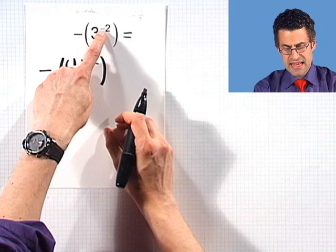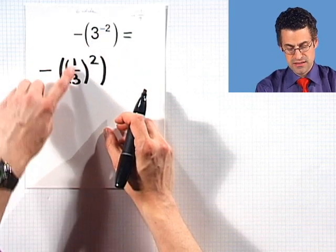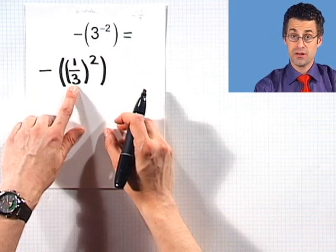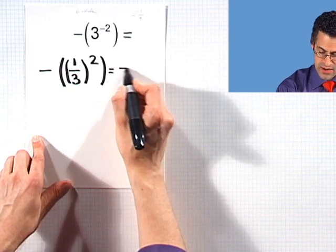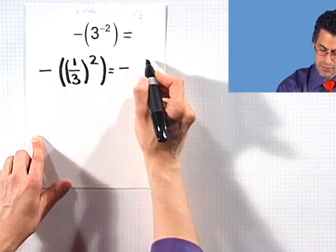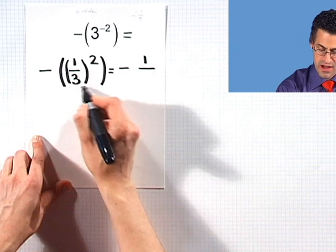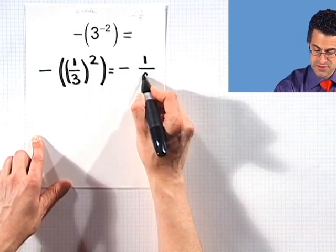So that negative exponent leads to the reciprocal of the base. And now I can square the top, which is a 1, square the bottom. 3 squared is 3 times 3, and I get 9.